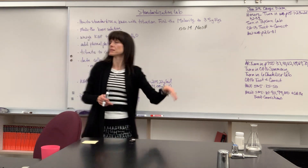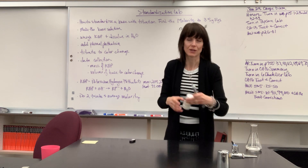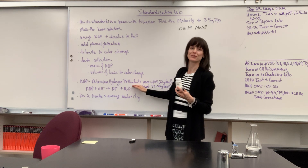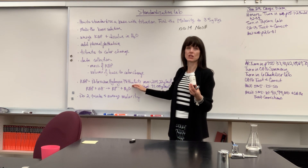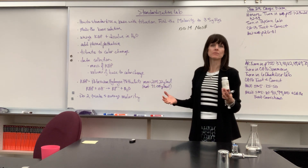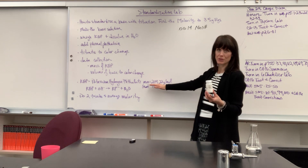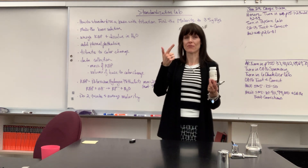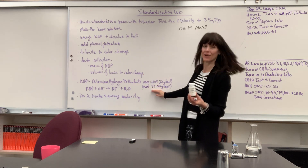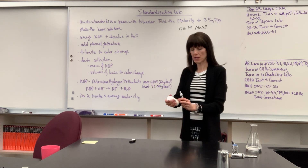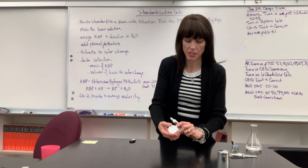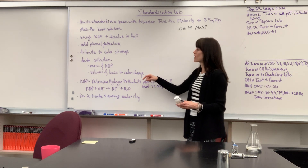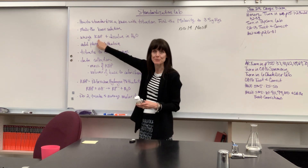So the first thing you do is make the base solution. Second, you're going to weigh out KHP. Here's a little bottle of KHP. KHP stands for potassium hydrogen phthalate — this is just our acronym because it's such a long name. The molar mass, if you need to look it up, is 204.22. It is not 71.08. Students will take potassium plus phosphorus plus hydrogen to get 71.08, but that's not the chemical formula. Potassium hydrogen phthalate is actually KHC₈H₄O₄ — it has a phthalate in it. So be careful. The molar mass is for potassium hydrogen phthalate; we just happen to call it KHP. That's its nickname.